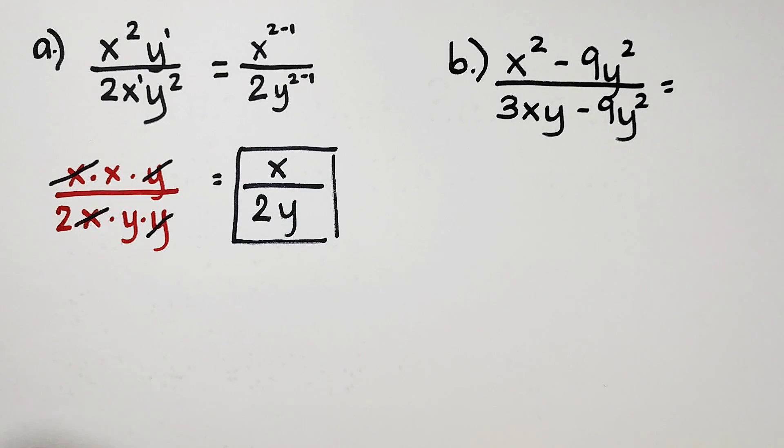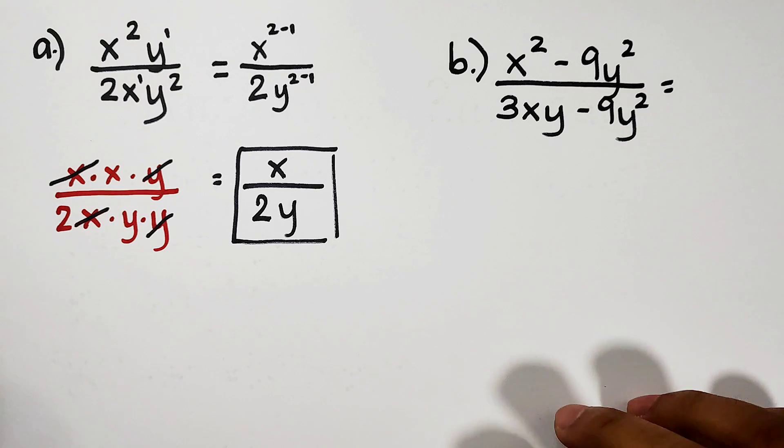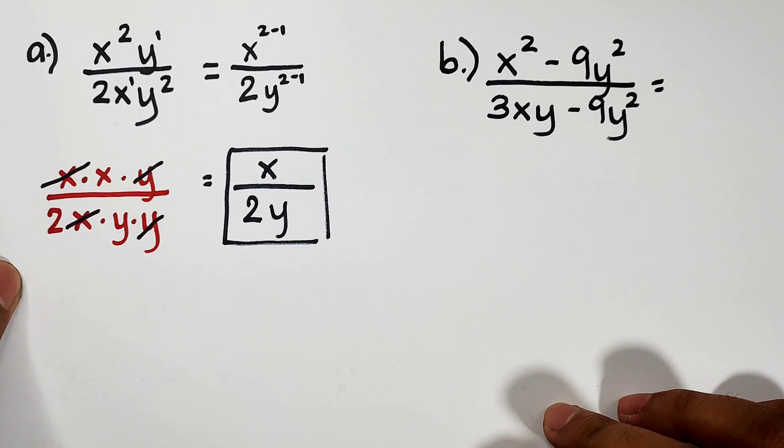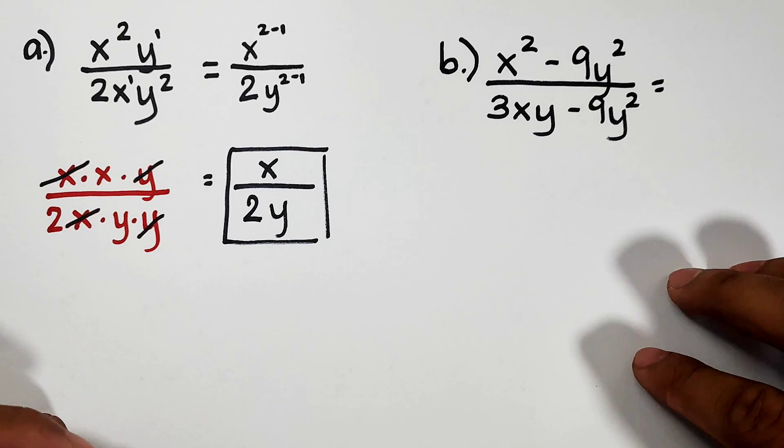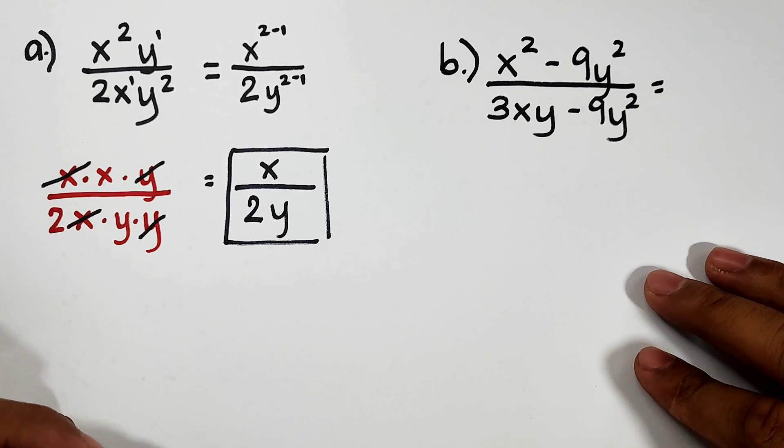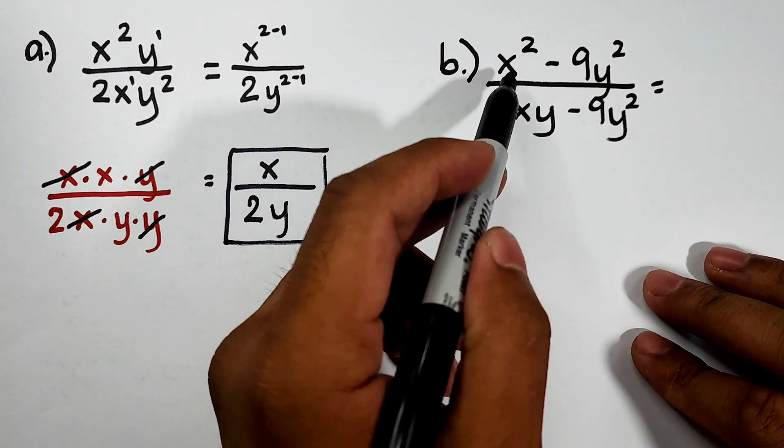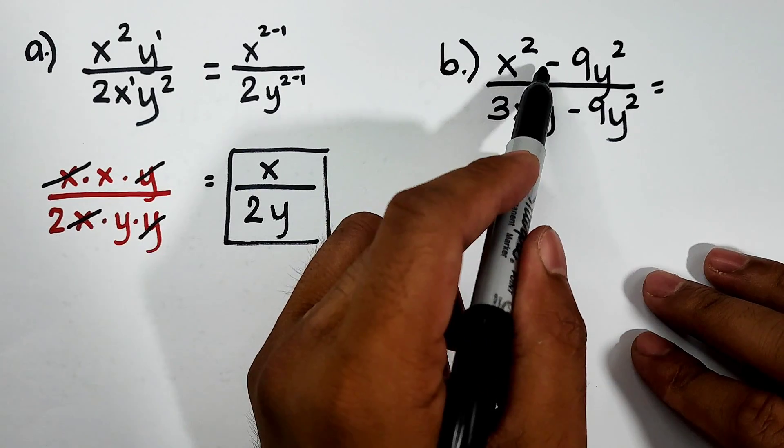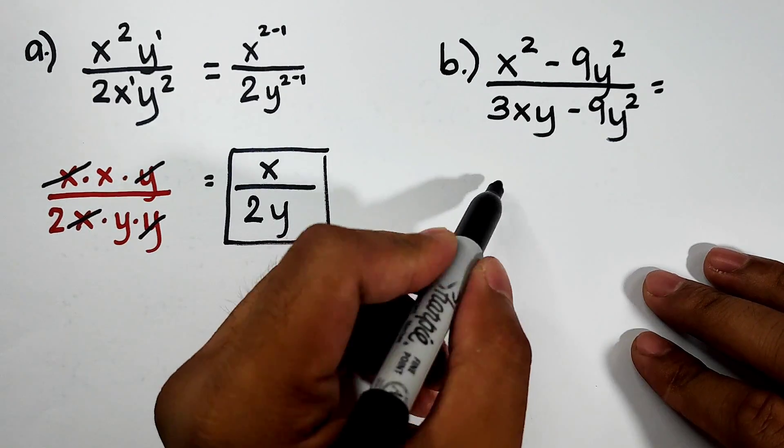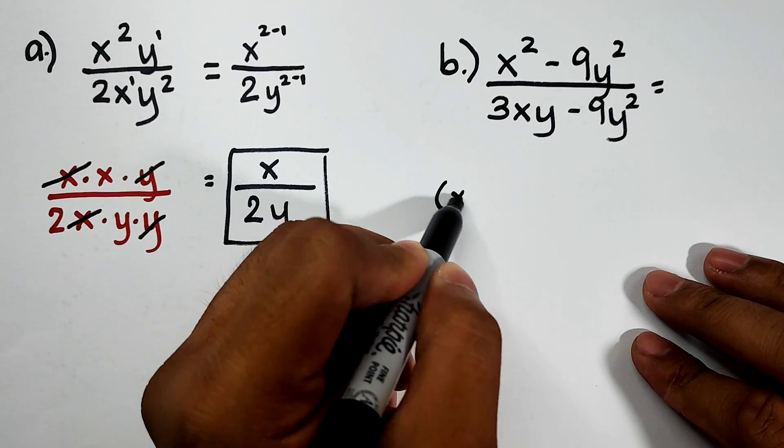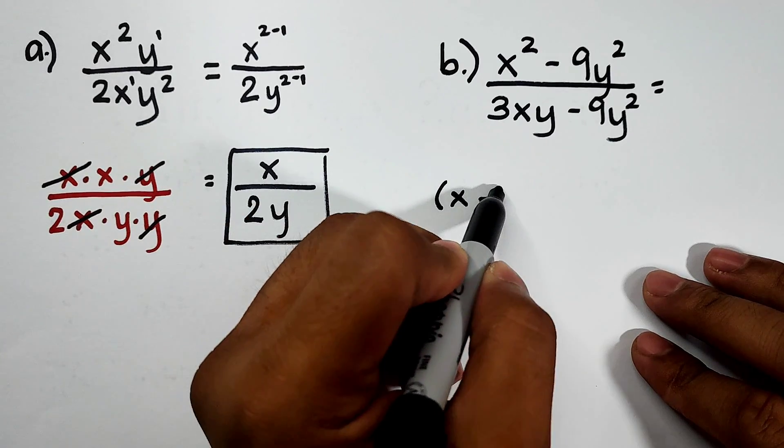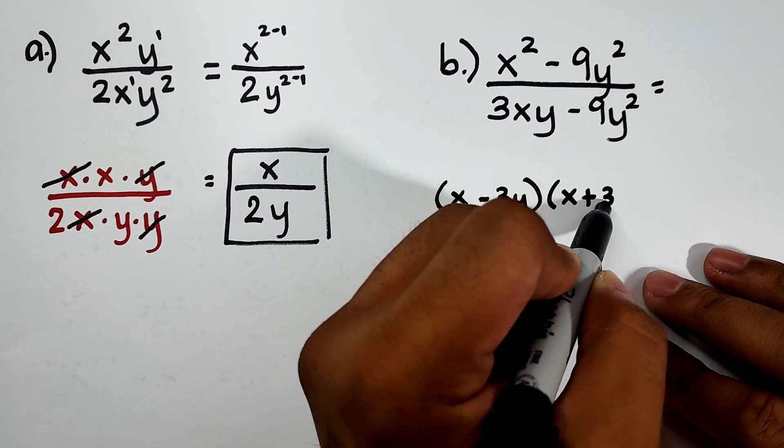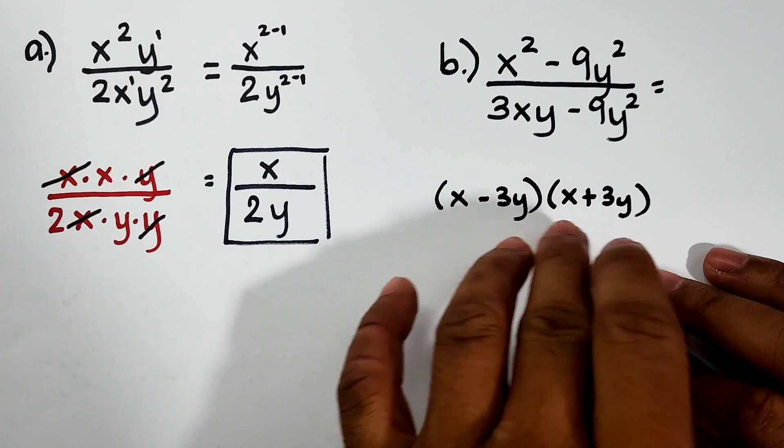Let's move on with letter B. For letter B, we have x² - 9y² over 3xy - 9y². Here, applicable dito is factoring. Let's factor out this first. This is difference of two squares. So when we factor that, the factors are (x - 3y)(x + 3y).